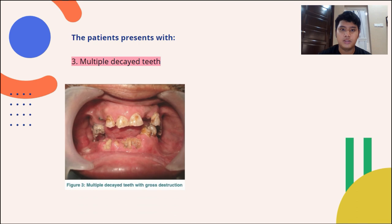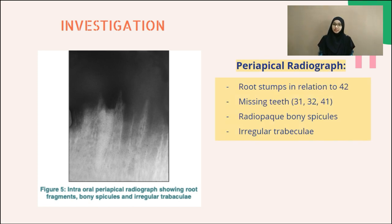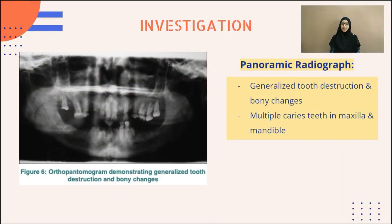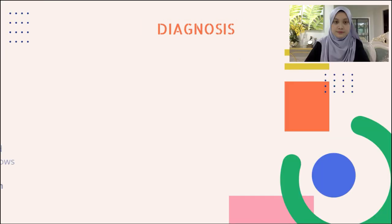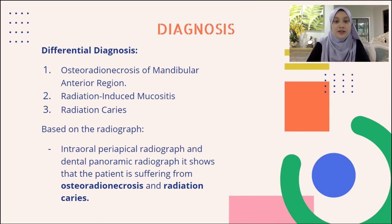The patient also presented with multiple decayed and non-healing sockets. From the periapical radiograph, there were root stumps in relation to 42, missing teeth in relation to 31, 32, and 41, radiopaque bony spicules, and irregular trabeculae. In the panoramic radiograph, there was generalized tooth destruction and bony changes with multiple carious teeth in the mandible and maxilla, indicated by radiolucency between radiopaque areas. Based on examination and investigation, the differential diagnoses included osteoradionecrosis of the mandibular anterior region, radiation-induced mucositis, and radiation caries. The final diagnosis confirmed the patient was suffering from osteoradionecrosis and radiation caries.